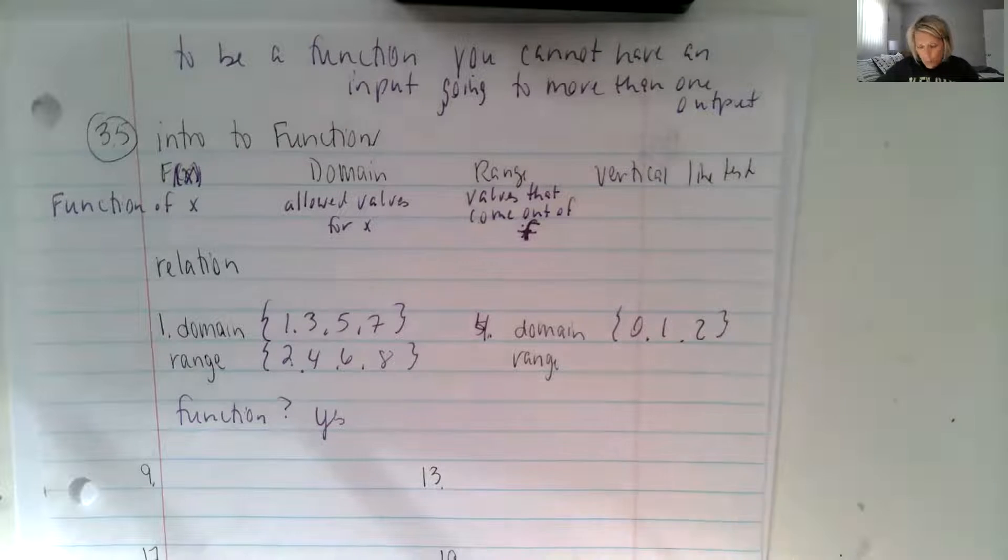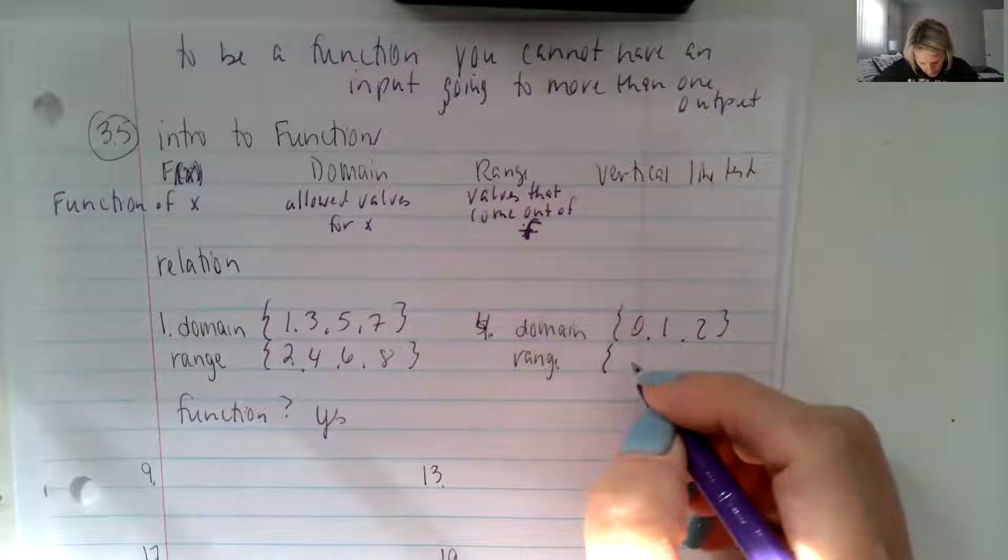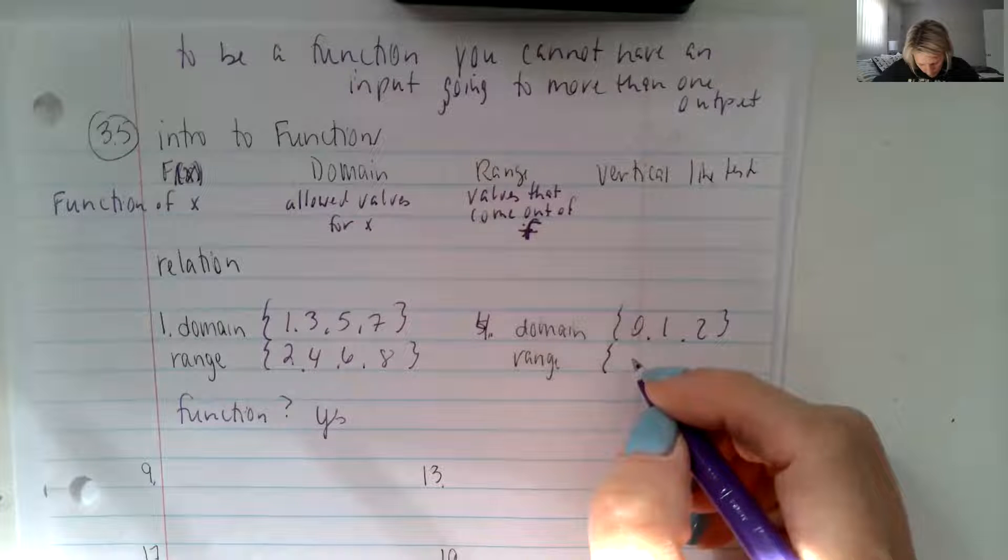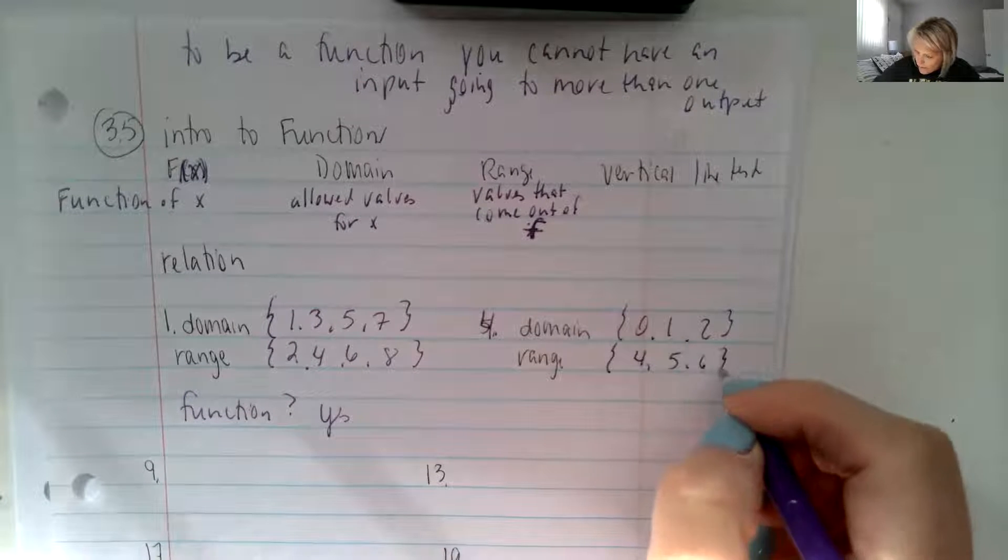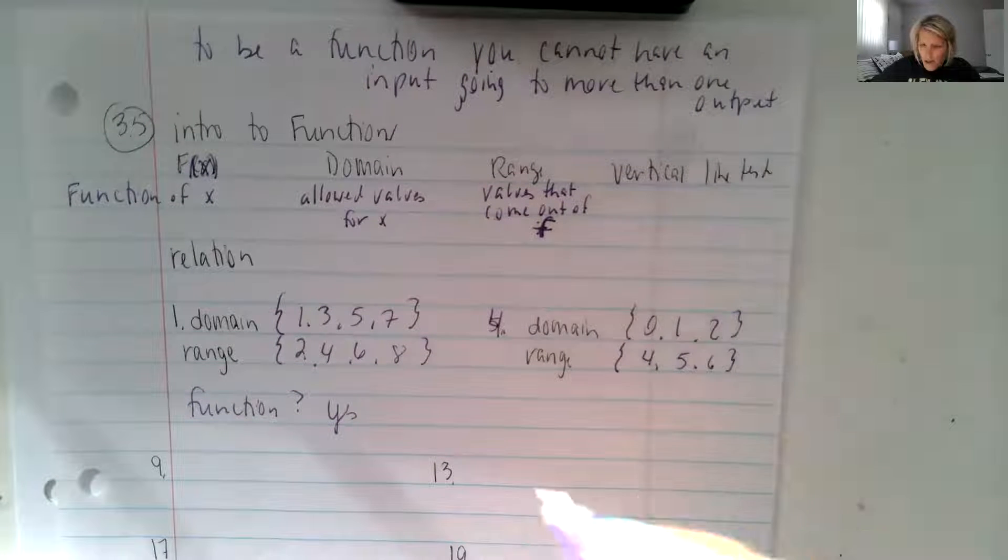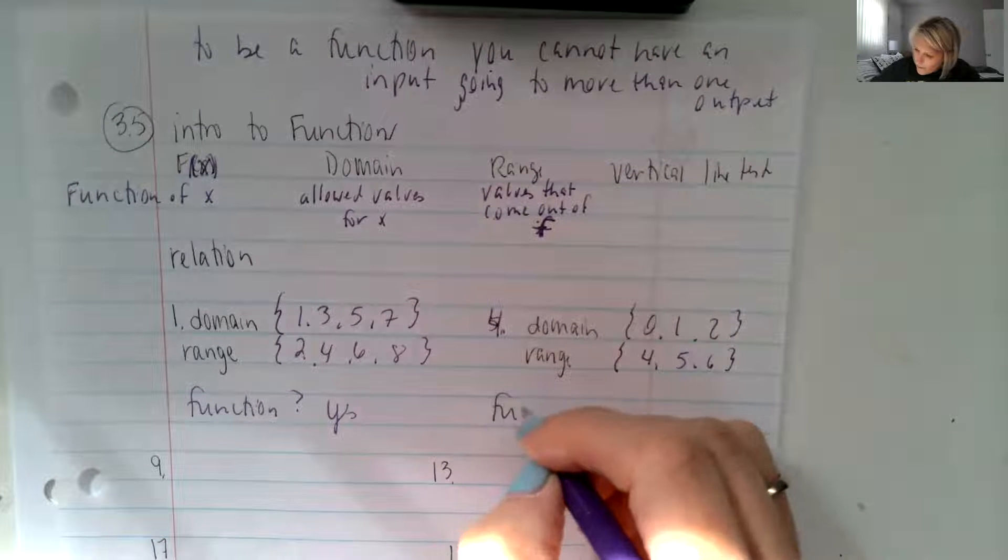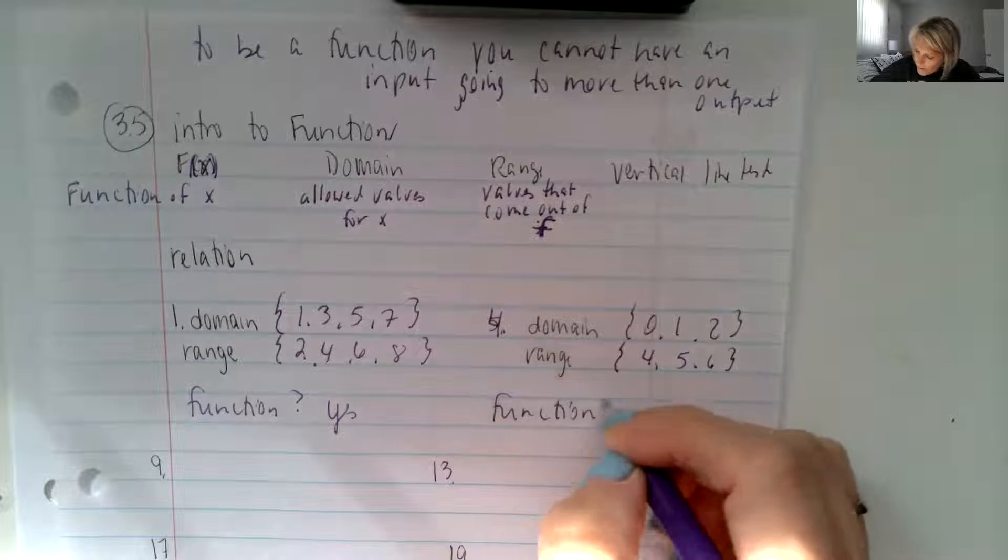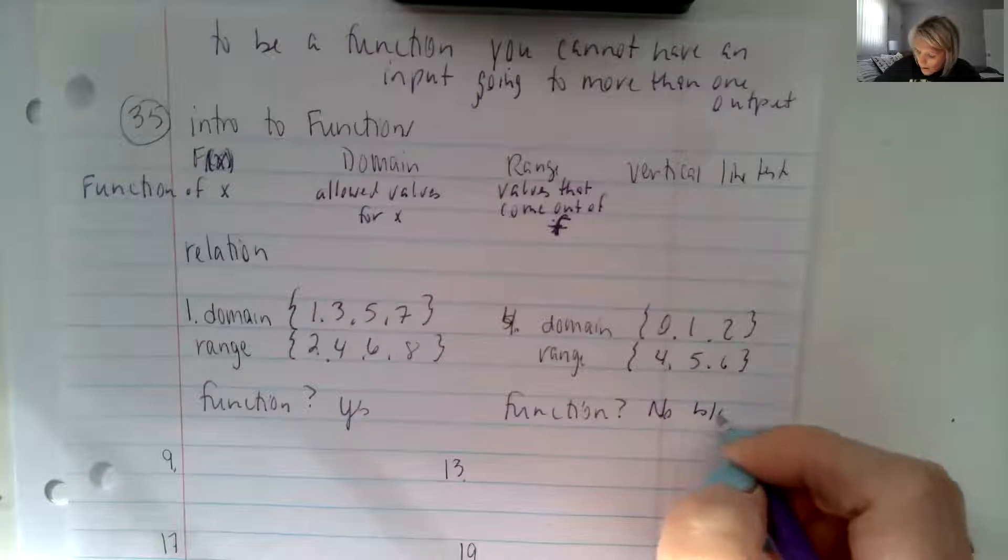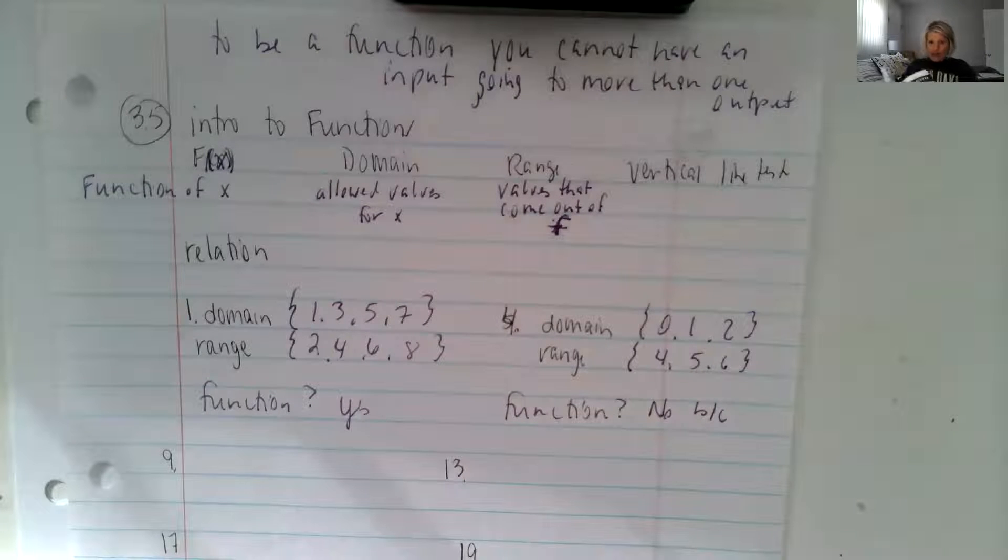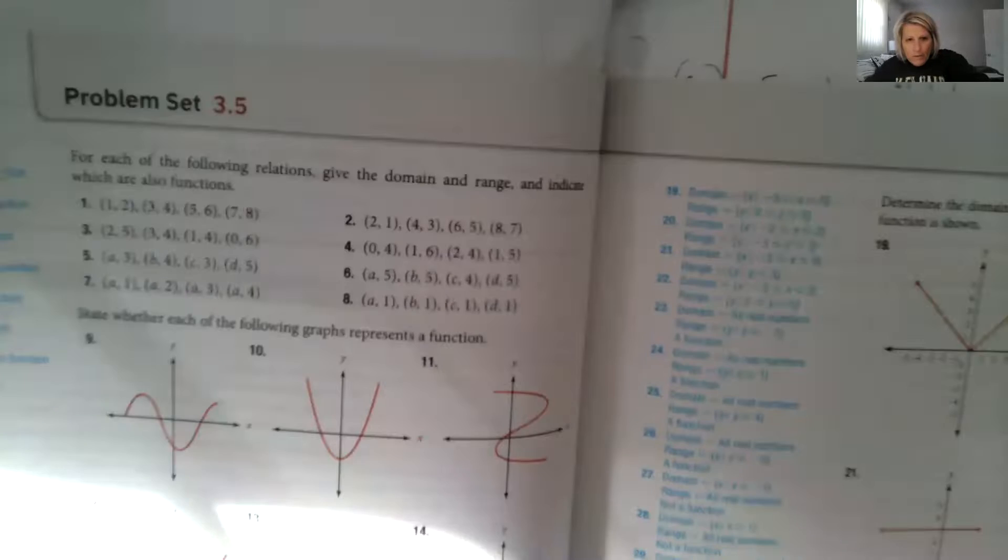And then our outputs for the range are, it looks like four, five, and six are all possibilities. And then it's asking if number four is a function. That's a question.